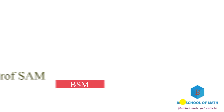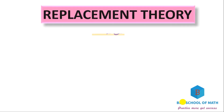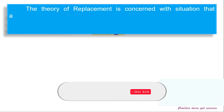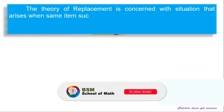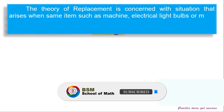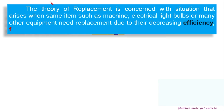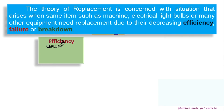Hello and welcome, this is Sam from BSM School of Math. Replacement theory is concerned with situations that arise when items such as machines, electrical light bulbs, or other equipment need replacement due to their decreasing efficiency, failure, or breakdown.